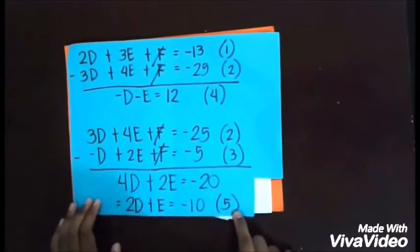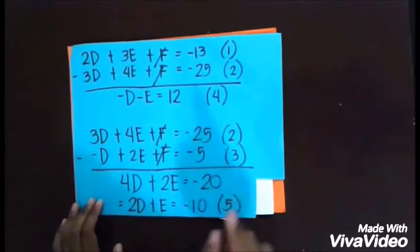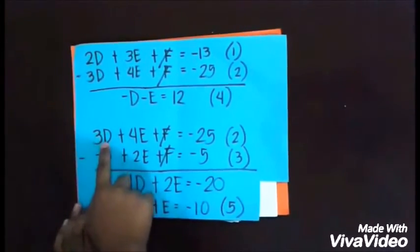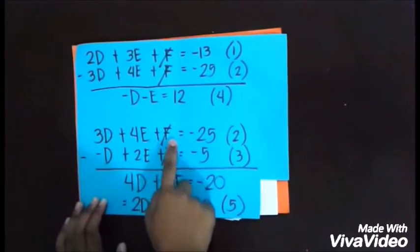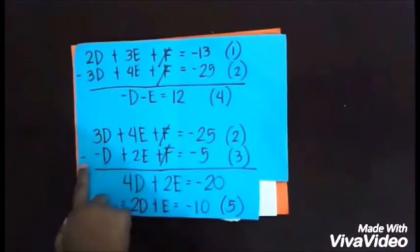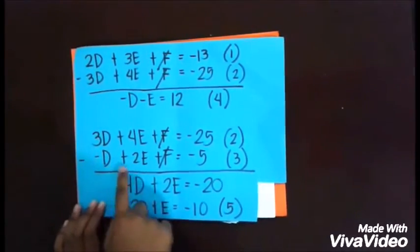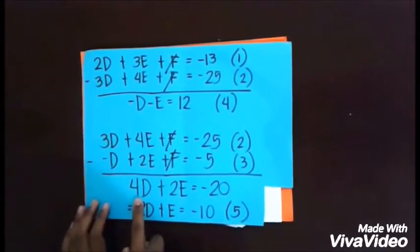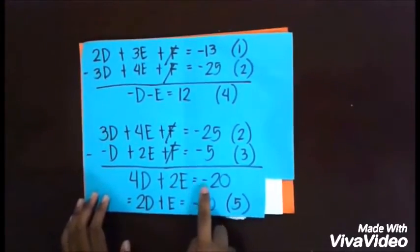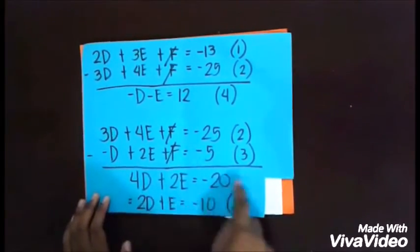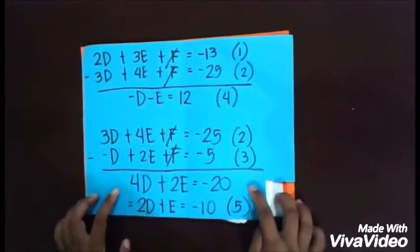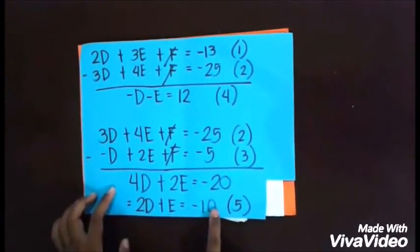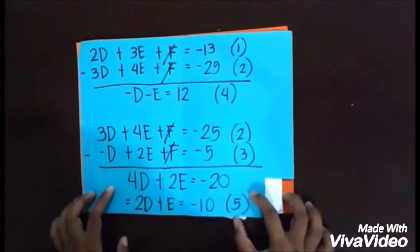To obtain Equation 5, combine Equation 2 and Equation 3: (3d + 4e + f = -25) minus (-d + 2e + f = -5). This gives 4d + 2e = -20. Since all terms are divisible by 2, divide by 2 to get 2d + e = -10. This is Equation 5.